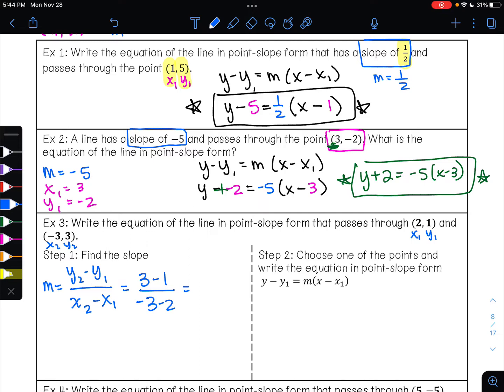3 minus 1 is 2. Negative 3 minus 2 is negative 5. So my slope is 2 over negative 5. Now this is the benefit of point-slope form. Remember when we did slope-intercept form, then we needed to solve for b and then plug in the slope and the y-intercept to write the equation. Here you don't need to do that. All you need to write point-slope form is a point. We have two, so we're just going to pick one. And the slope. We just found the slope. So now that we know those two things, we could write our equation of the line.